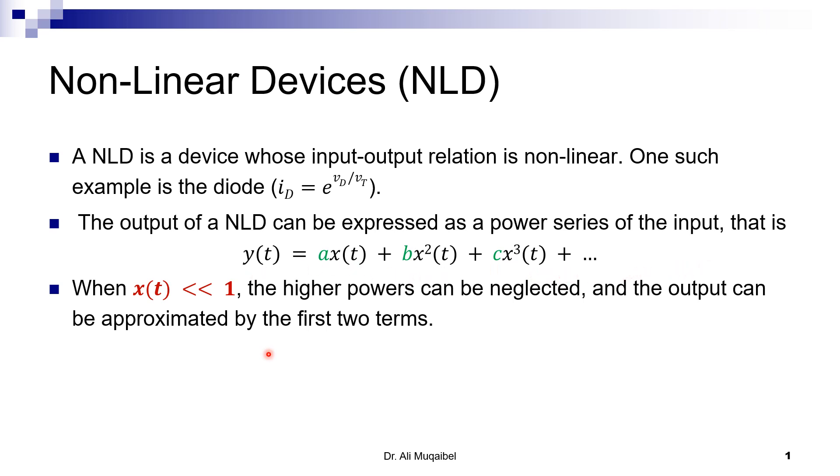Now, if your input X is considered to be the sum of two signals—remember, our objective is to multiply M by C—adding is not a problem because we can put them in series. So if we add the two together and then take